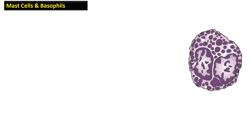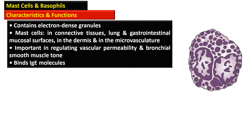Mast cells are long-lived and reside in all supporting tissue. They contain electron-dense granules and are present in connective tissue, lung, gastrointestinal mucosal surfaces, the dermis, and in the microvasculature. Mast cells have surface receptors for IgE and are important in regulating vascular permeability and bronchial smooth muscle tone. When IgE-sensitized mast cells are stimulated by antigen, physical agents such as cold, trauma, or cationic proteins, there is release of several pharmacologically active substances.